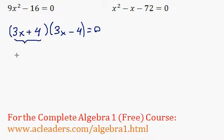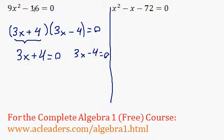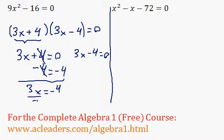So we can make 3x plus 4 equals 0, or 3x minus 4 equals 0. They should both be solutions to our equation. Now let's subtract 4 from both sides of the equation. So 3x is equal to negative 4. I can divide both sides by 3. So x is equal to negative 4 over 3.